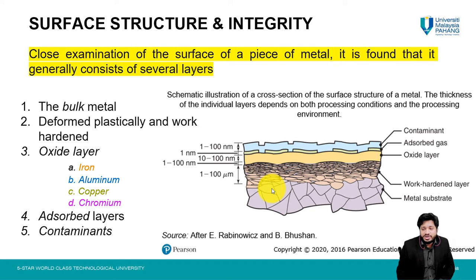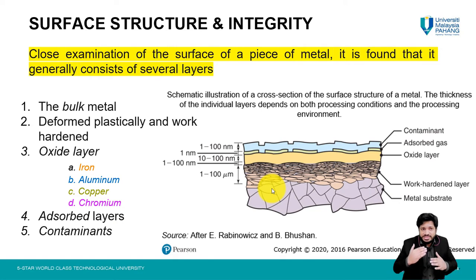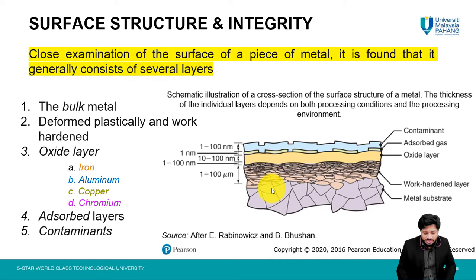After the metal substrate, we have the work hardened layer. This layer corresponds to the fact that if you have carried out machining or additional finishing operations, the grains or structure at the surface become plastically deformed due to the process carried out. This is called the plastically deformed or work hardened layer, and it depends on the extent of manufacturing that was carried out.